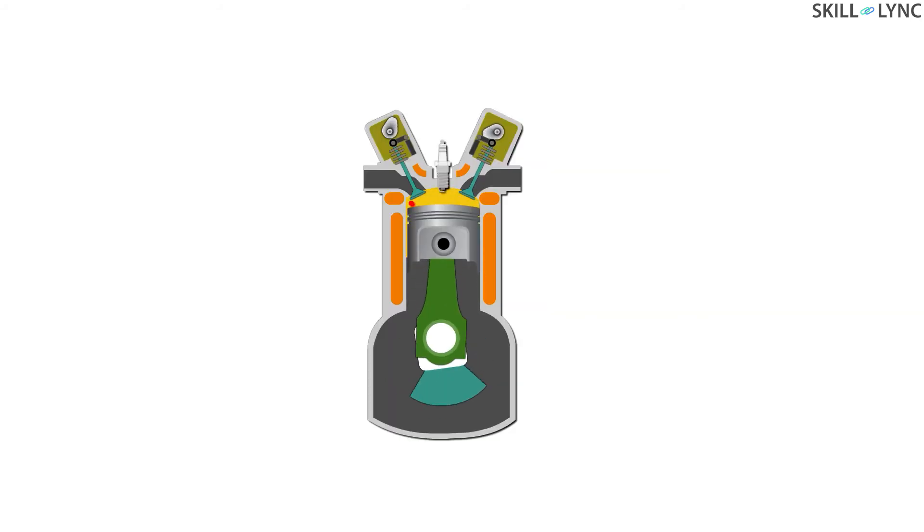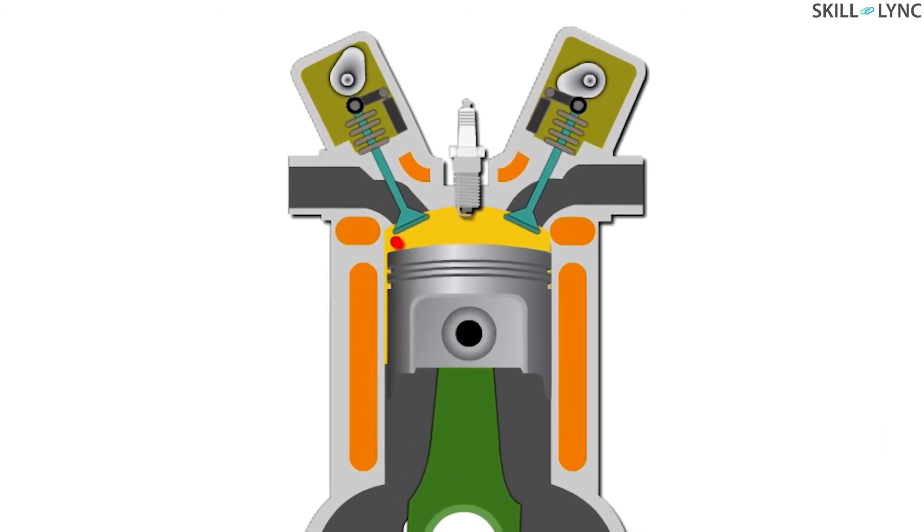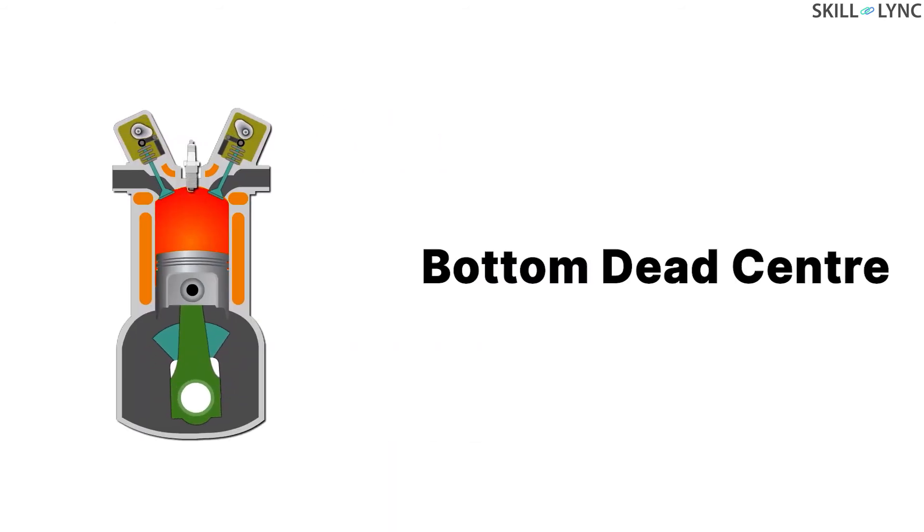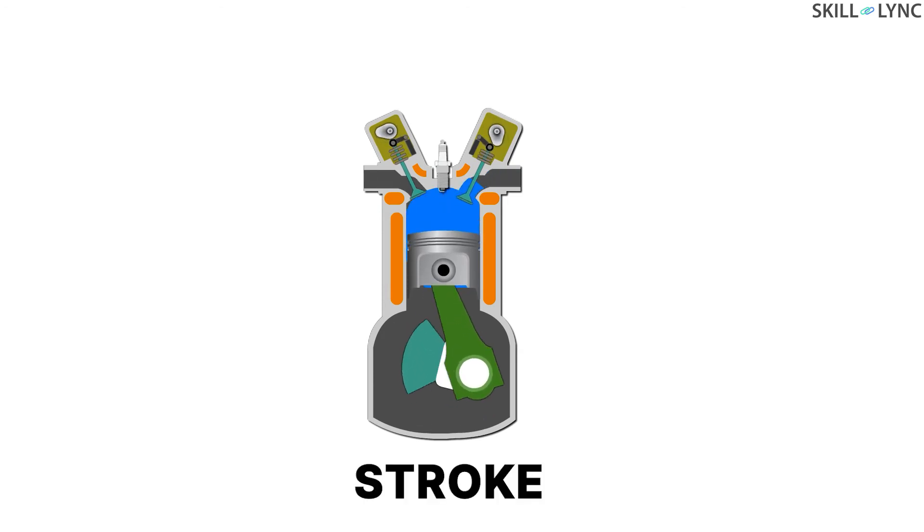From the animation we can observe that the piston reaches a topmost position before moving down to its lowest position. After this, the piston moves towards its topmost position again. This topmost position of the piston is called top dead center, and the lowest position of the piston is called the bottom dead center. The distance between the top dead center and the bottom dead center is called stroke.